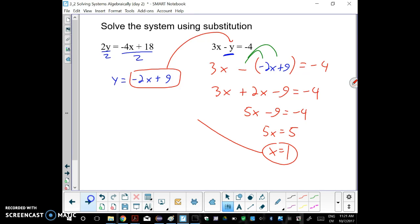Now find y. I'm going to go over to this equation and put 1 in for x. So we'll have y equals negative 2 times 1 plus 9, so negative 2 plus 9. And y is 7. So our solution is x = 1, y = 7, or (1, 7).